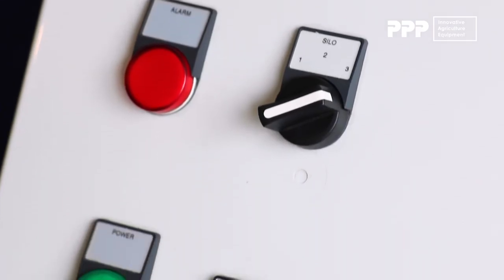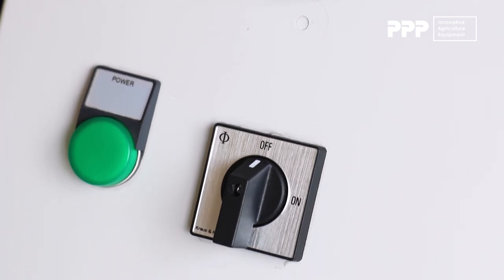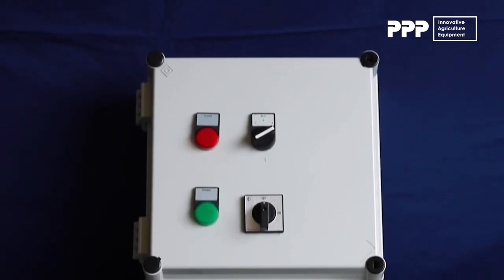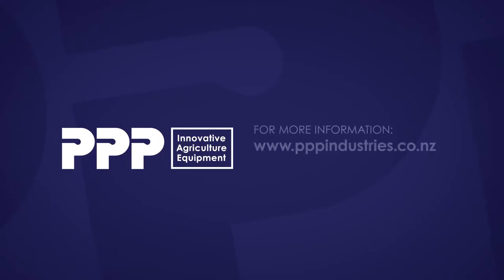If you're still having issues please give us a call on 0800 901 902 and we'll be happy to talk you through it or send a serviceman out to you. PPP your Innovative Agricultural Specialists.